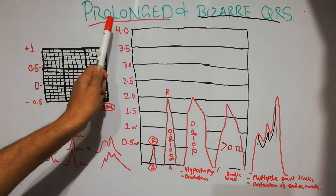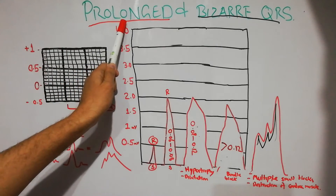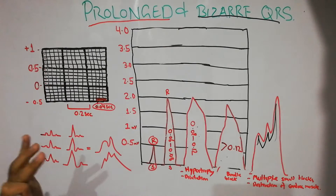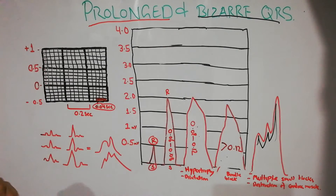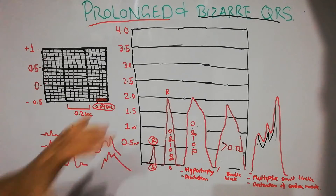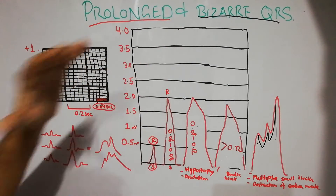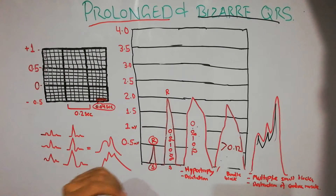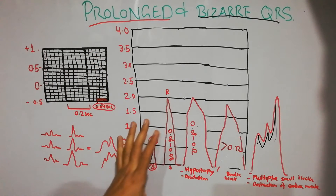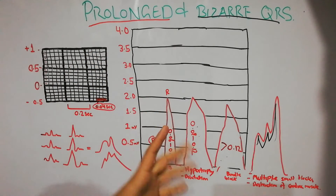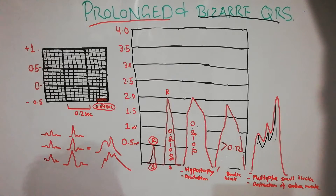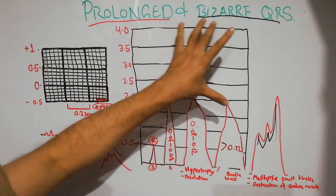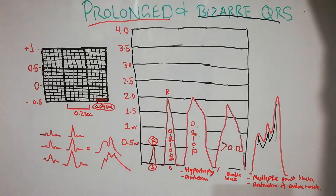Today we are going to discuss the prolonged and bizarre QRS complex. In the previous lecture we discussed the causes of high and low voltage of the QRS complex, especially in the bipolar limb leads: lead 1, lead 2, and lead 3.